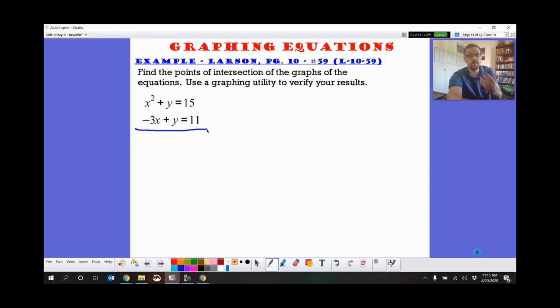So I am able to eliminate that y, so I'm going to subtract these two equations. 15 minus 11, that's 4. The y's cancel out. And we get x squared plus 3x. And now that's a quadratic that I can set equal to 0. x squared plus 3x minus 4 equals 0. Do a quick factor.